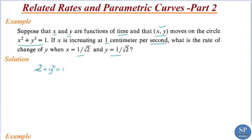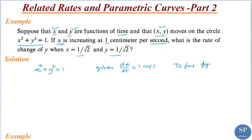Here we are given that the point x, y moves along the circle x squared plus y squared equal to 1. That is, it is a relation connecting the variables x and y, and we are given that x and y are functions of the time t. We are given that x is increasing at a rate of 1 centimeter per second, that is dx by dt is equal to 1. We have to find the rate of change of y when x equals 1 by root 2 and y equals 1 by root 2, that is, we have to find dy by dt.